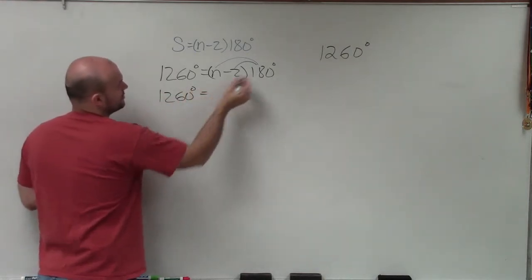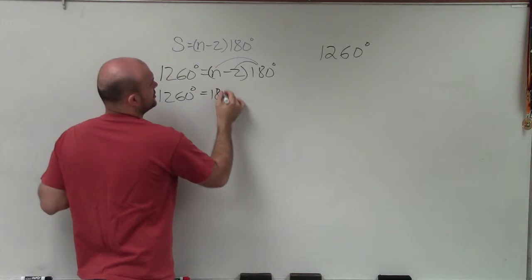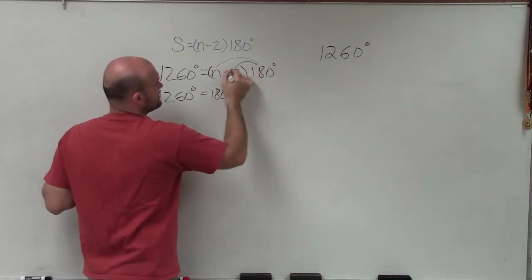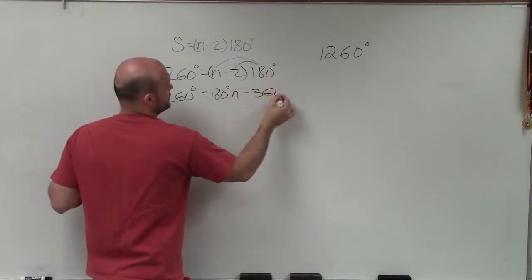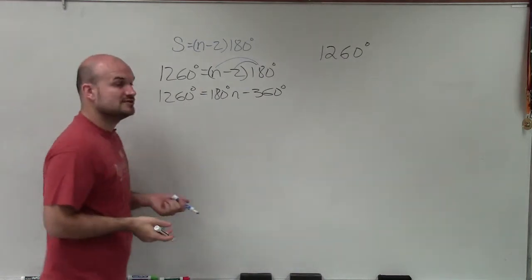So I have 1,260 degrees equals 180 degrees times n is 180n degrees, and 180 degrees times negative 2 is negative 360 degrees. Now I have a two-step equation.